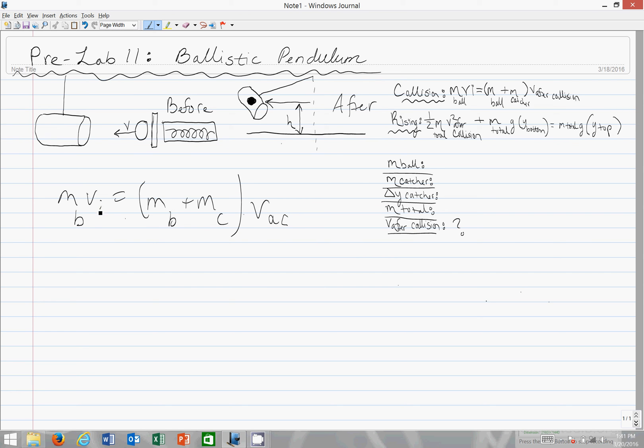So this one's pretty straightforward. You just divide both sides by m_b plus m_c, and so this gives you v after collision based on the first equation.